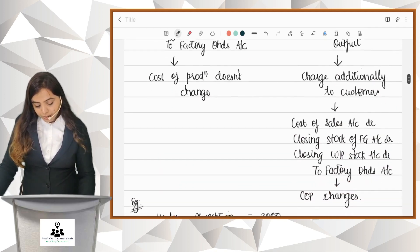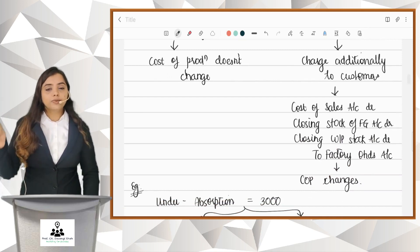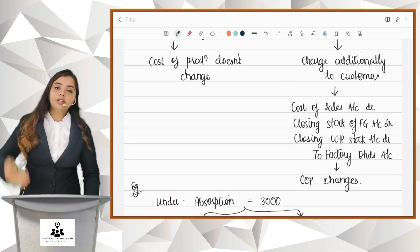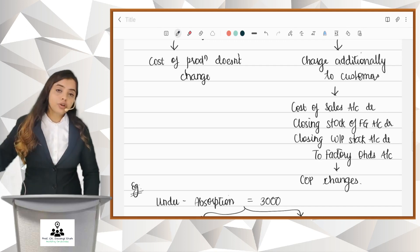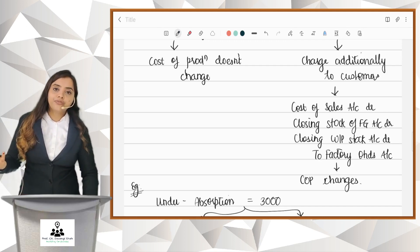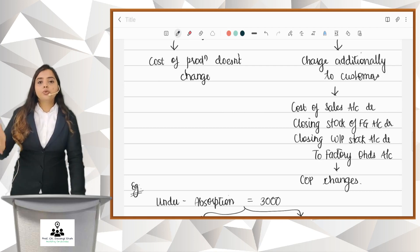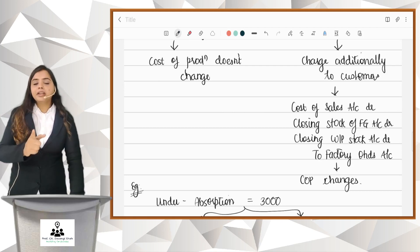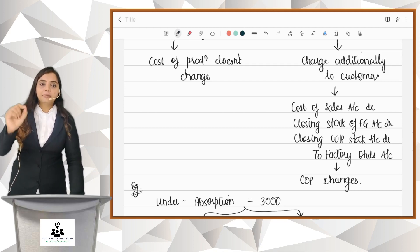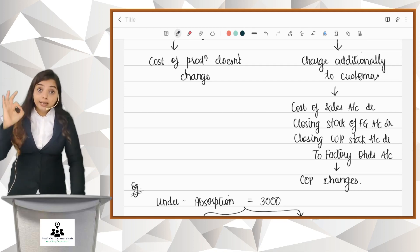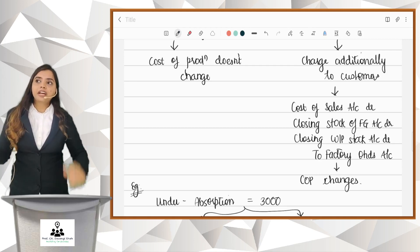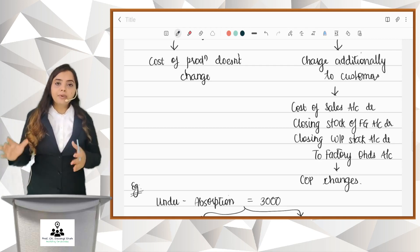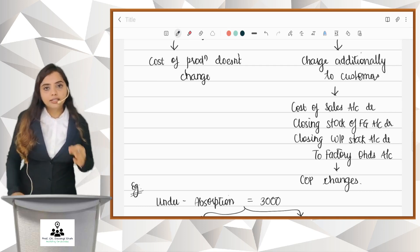When you charge additionally to the customer, your cost of sales will increase. If the units are in stock and not sold, then you will increase the value of your finished goods stock — your closing stock of finished goods — to Factory Overheads. Remember, when you use the supplementary rate, you are charging additionally to the customer, which means the customer's cost per unit is increasing. But when you transfer to Costing P&L, there is no change in cost per unit. When you use the supplementary rate, the cost per unit increases.